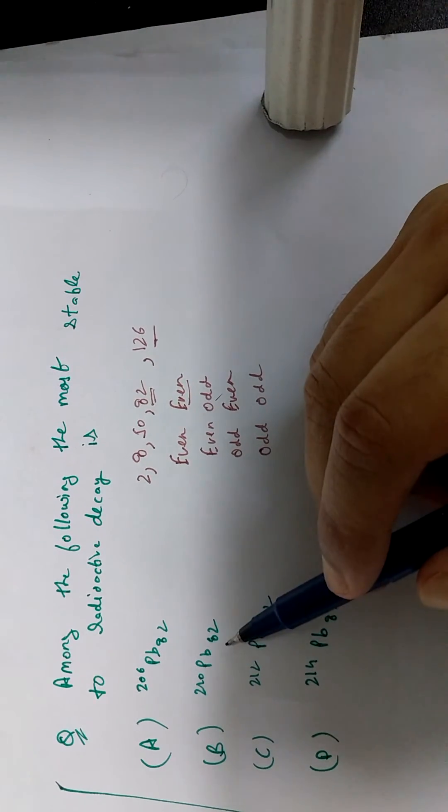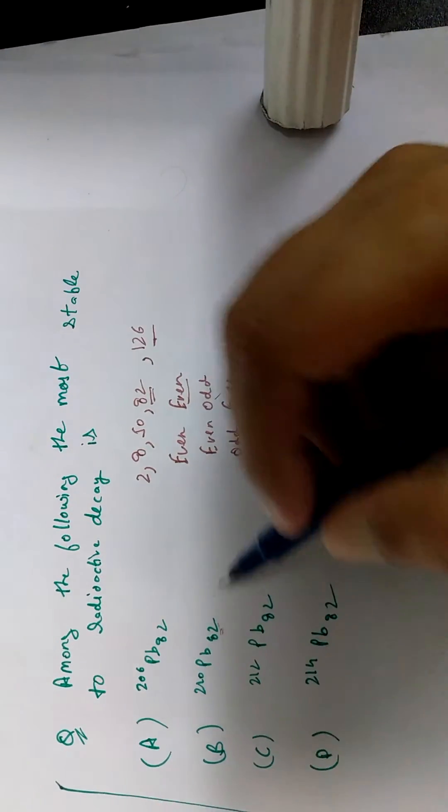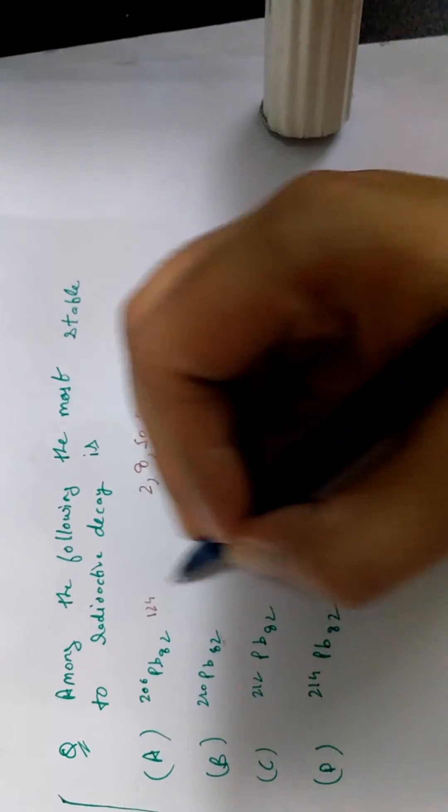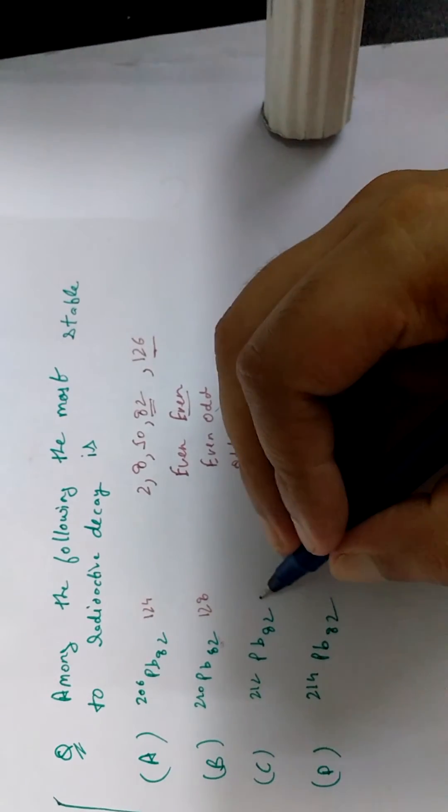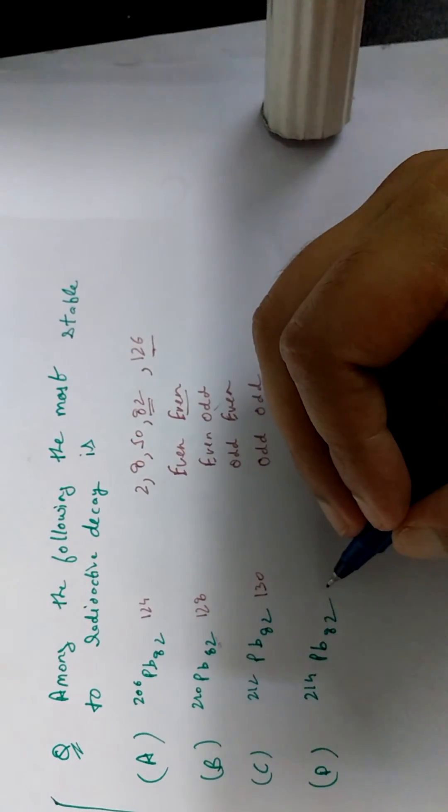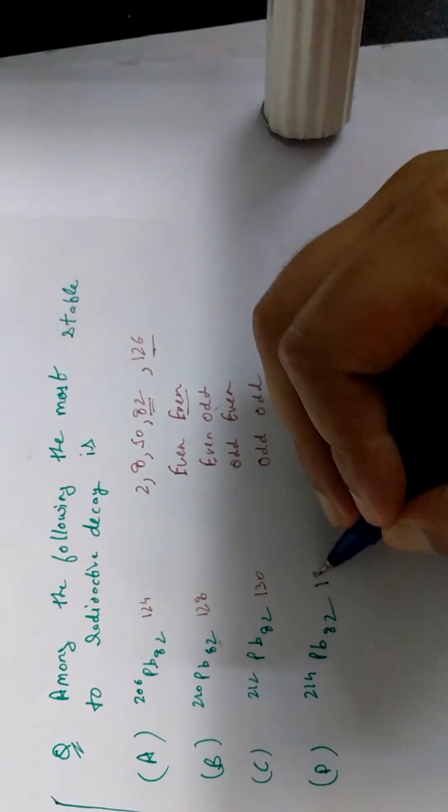Then we come on to the second one. Here also, we see that the number, the proton has a magic number, but the neutron is again 128. So over here, it's 124. Over here, it's 128. Coming on to the next one, it's 130. And the next one is 132.